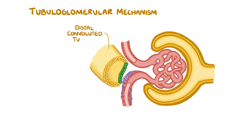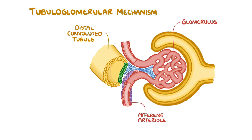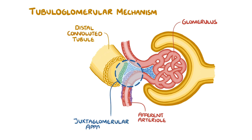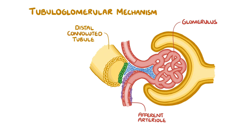Second is the tubuloglomerular mechanism, which involves the distal convoluted tubule and the glomerulus. A part of the distal convoluted tubule loops around and gets quite close to the afferent arteriole. This region where they are in close contact is called the juxtaglomerular apparatus — with 'juxta' meaning next to the glomerulus. In this region of the distal convoluted tubule there is a group of cells collectively called the macula densa.